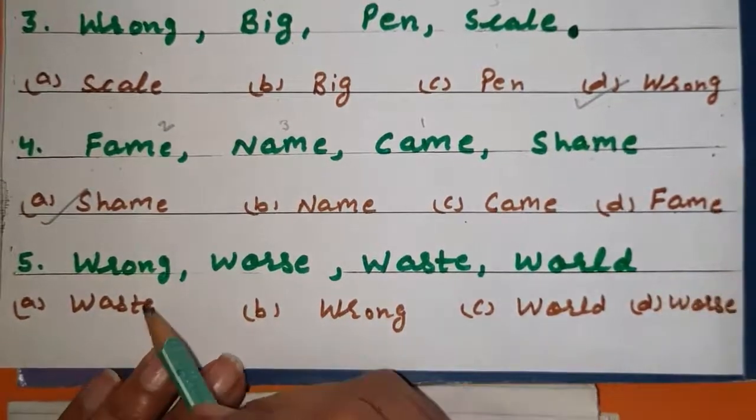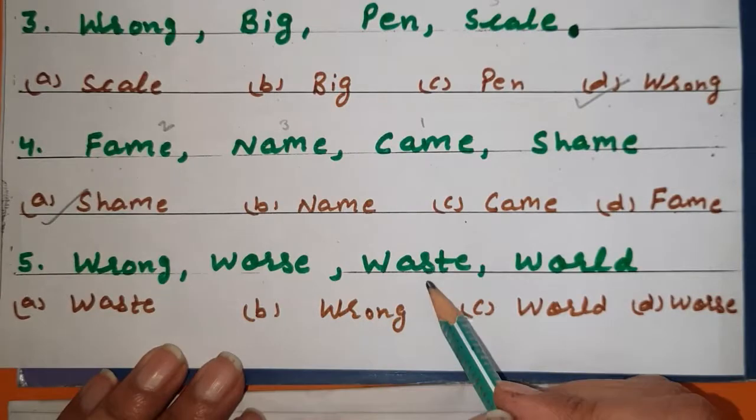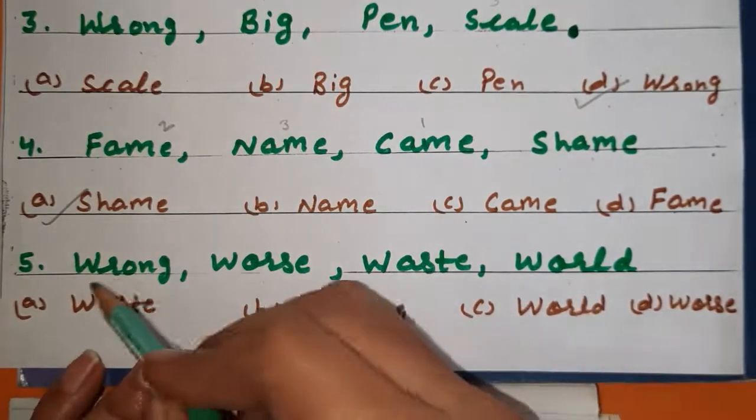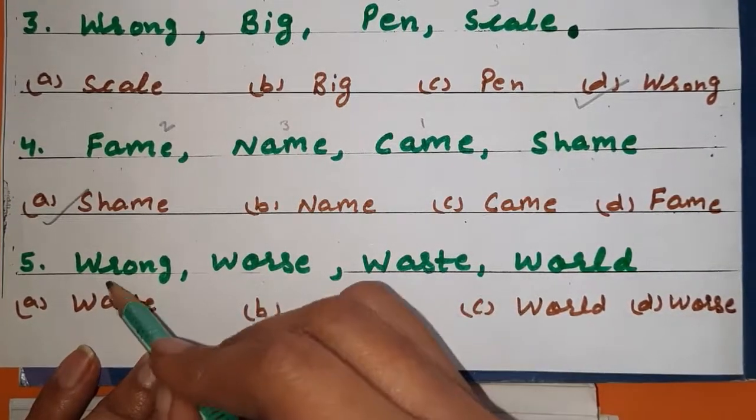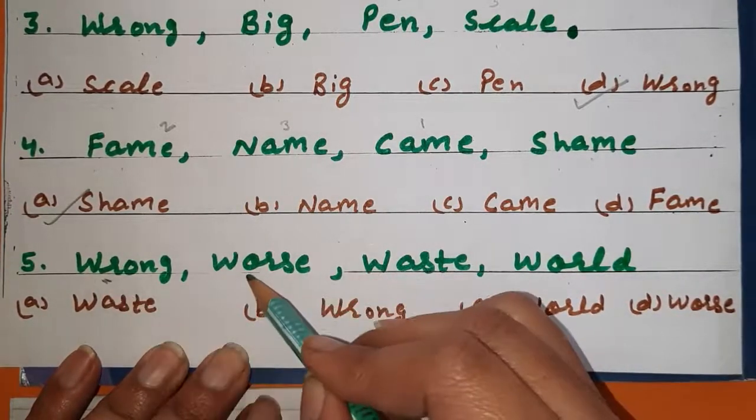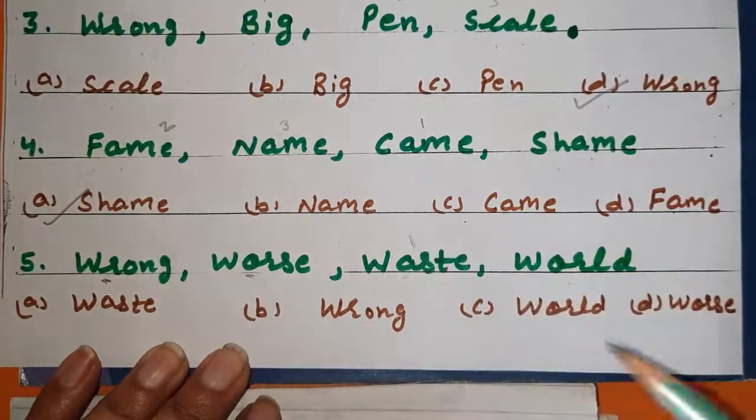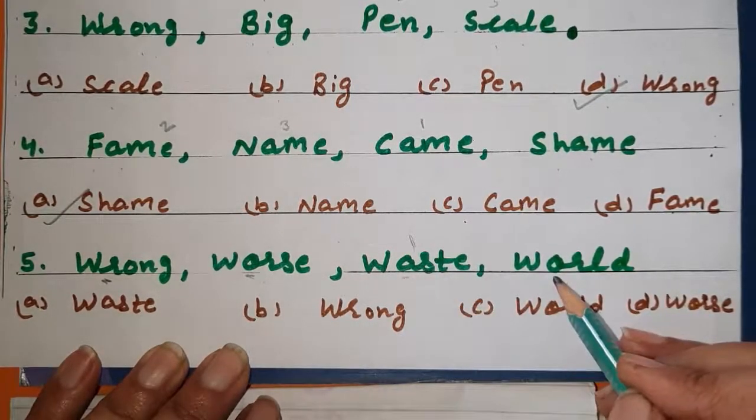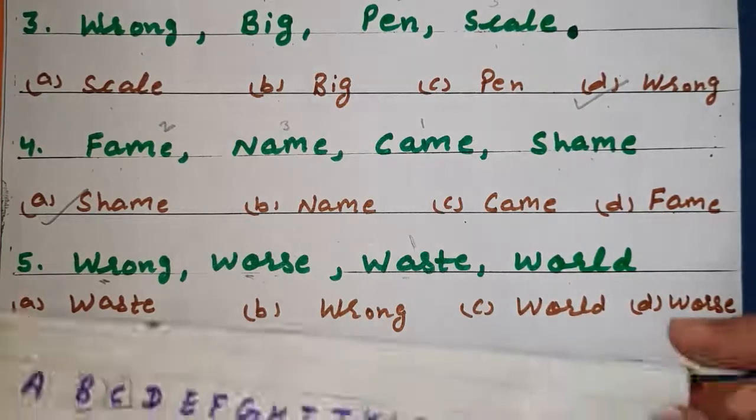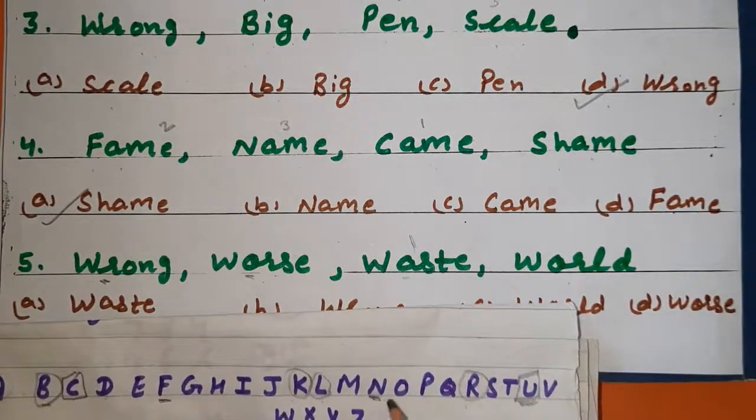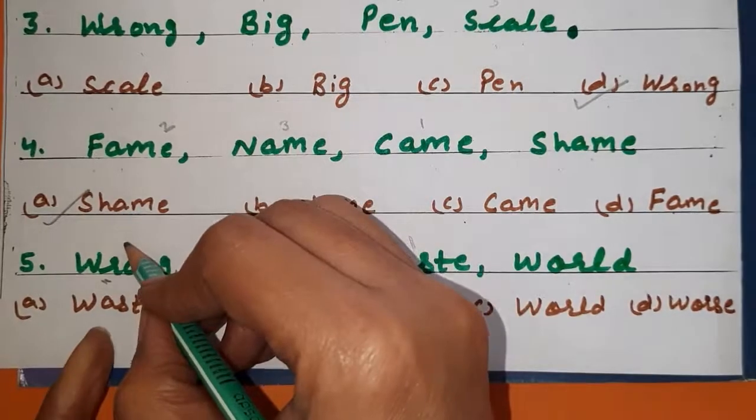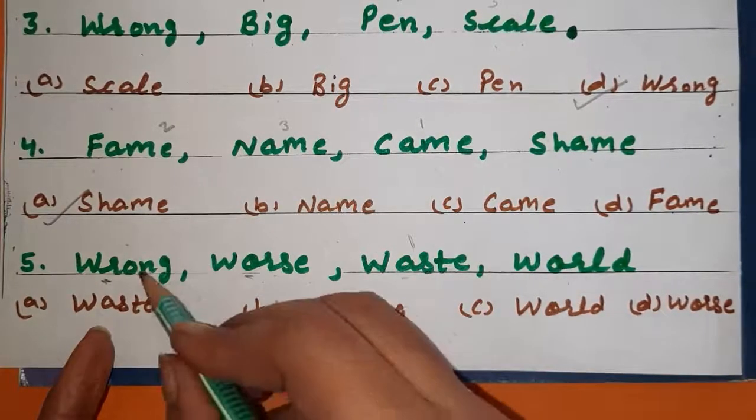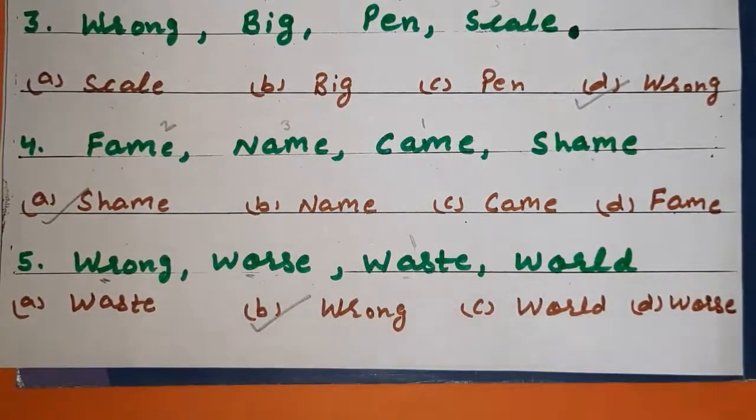Now come to last question, question number five. Wrong, worse, waste, word. W, W, W, W, so it will not help us. We will come to the second alphabet. R, O, A. A is the first word. O, O are the same. So let's check the third. O and R. To just word where R is, W, so it will be the last one. Wrong will be the last one. Got it?